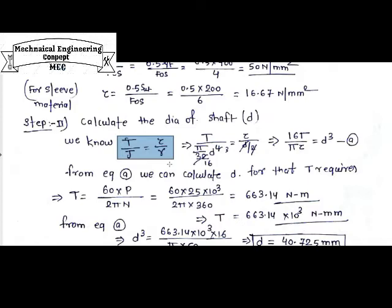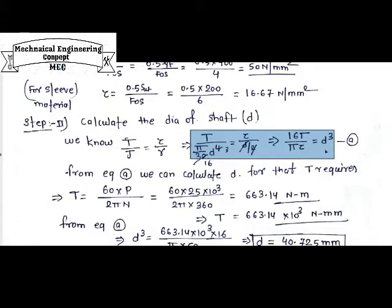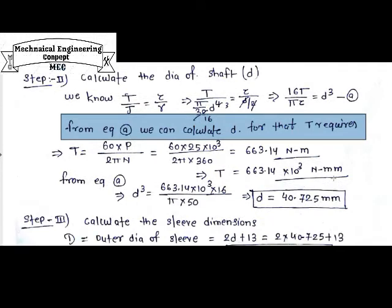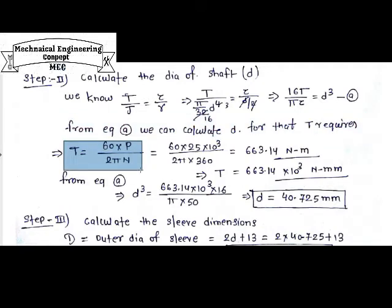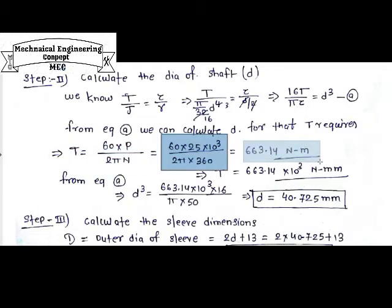Substituting J = π/32 × d⁴ (polar moment of inertia) and simplifying the torsional equation, we conclude: d³ = 16T / (π × Tau) — this is Equation A. To calculate the shaft diameter, we first need to calculate the torque. Torque is given by T = (60 × Power) / (2π × N), where power is in watts and speed is in rpm.